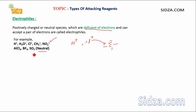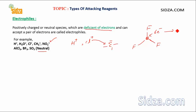Neutral molecules can also act as electrophiles. For example, BF3 (boron trifluoride) — boron has three electrons in the valence shell, and after sharing with fluorine, boron has only six electrons in its valence shell. Its octet is not complete; it is deficient of two electrons. Therefore, boron in BF3 can act as an electrophile. Similarly, AlCl3 also has six electrons in its valence shell and is electron-deficient, so these neutral molecules can also act as electrophiles.